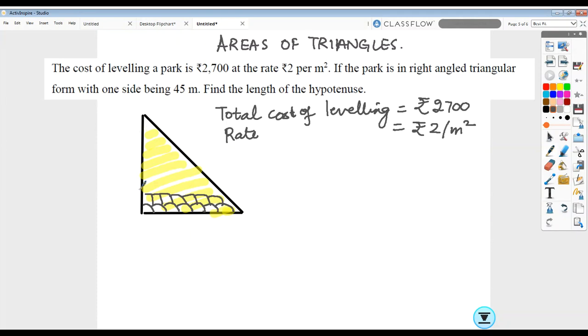So if I have to find out how many such blocks were there, we can always divide the total cost by the per unit cost. This will actually give us the area of the figure associated. So if I work this out, this comes out to be 1350 meter square.